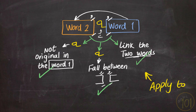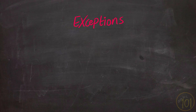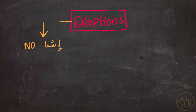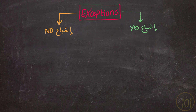This rule could be applied for the entire Qur'an. However, there are five exceptions. Four of these cases should have إشباع, and yet they don't — you are going to read them without إشباع. And there is one case that shouldn't have إشباع, yet it does. Let's look at the first four cases.